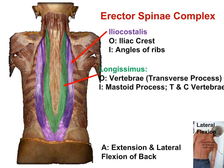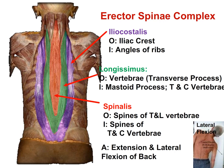Just medial to the iliocostalis is the longissimus. It originates on the transverse processes of the vertebrae and inserts on the mastoid process and thoracic and cervical vertebrae. Like the iliocostalis, it functions for extension of the back when both sides contract, or lateral flexion when only one side contracts. The final muscle of the erector spinae complex is the spinalis, which originates on the spines of the thoracic and lumbar vertebrae and inserts on the spines of the thoracic and cervical vertebrae — also helping with extension of the back. A helpful mnemonic to remember the order from lateral to medial is 'I like spaghetti' — iliocostalis, longissimus, spinalis.